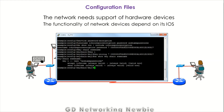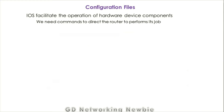This is a typical screenshot of the IOS. This IOS actually facilitates the operation of the hardware — if we want the hardware to work for us, we need the operating system. But we also need specific commands to direct the router to perform its job. For example, if we have the router and the IOS but haven't configured any routing protocol or given any IP address to any interface, then the router will not work as per our requirements.